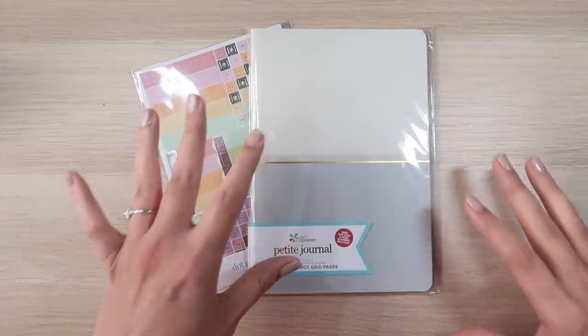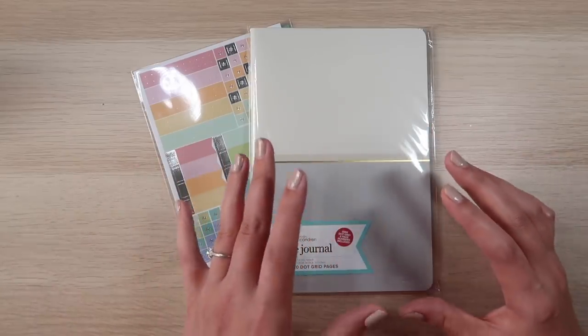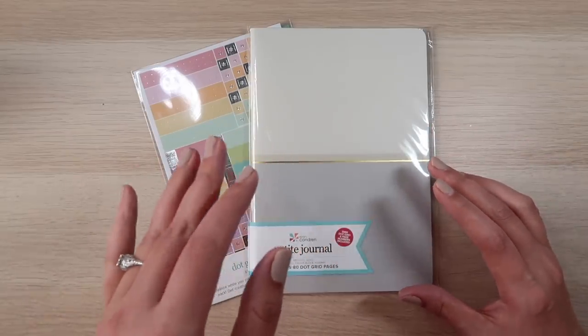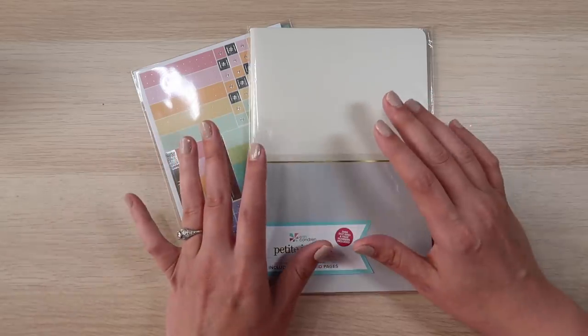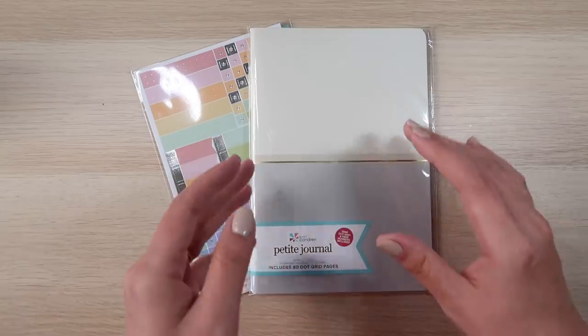These are the A5 size. Now their previous iteration of the blank journals for their folios had lines. I think they may have also had blank ones, but they did not have dot grid to the best of my memory. So these are a newer edition.